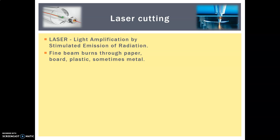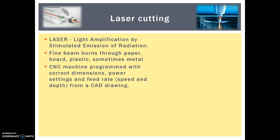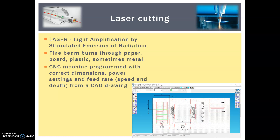What happens is that a fine beam burns through paper or plastic. Sometimes it can be done on metal, although that's much more commercial — we don't tend to do that in school. A CNC — that stands for Computer Numerical Controlled — machine is programmed with the correct dimensions, power settings, feed rate (that's speed), and depth from a CAD drawing. Here's one for a little sliding box that I made on 2D Design.